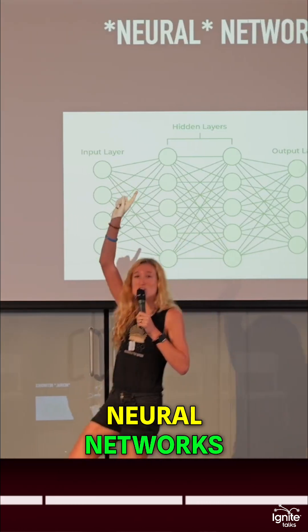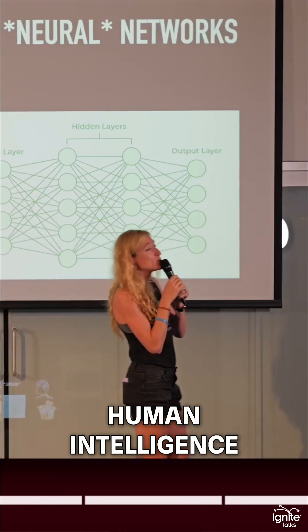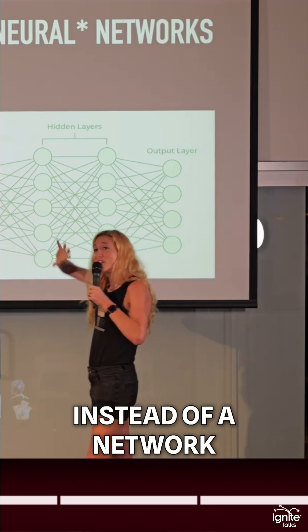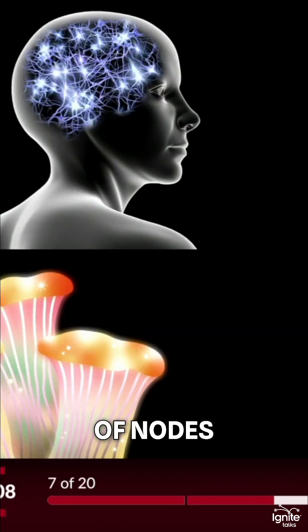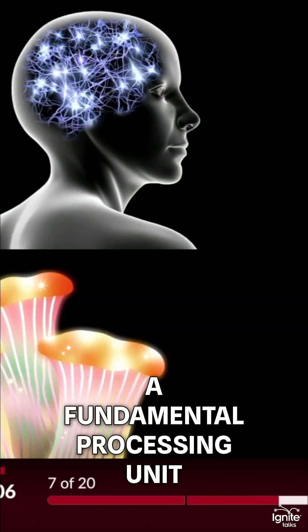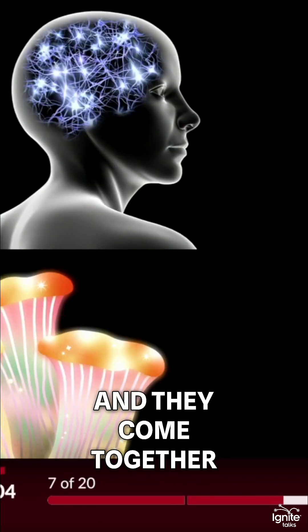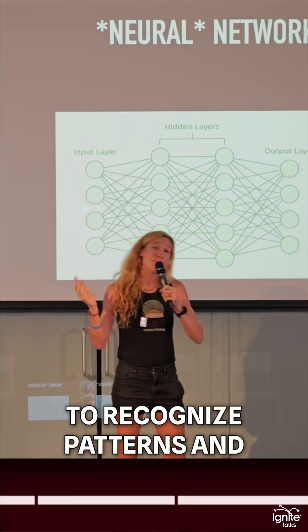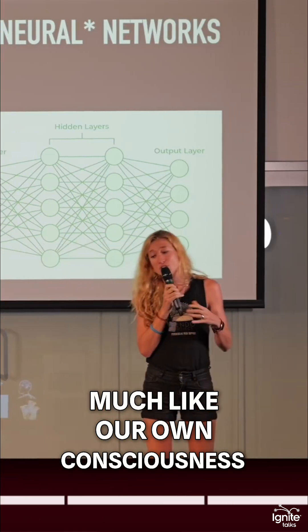I'm going to start with neural networks which were inspired by human intelligence. So instead of a network of neurons, they are a network of nodes. Each node is like a fundamental processing unit and they come together to recognize patterns and make decisions much like our own consciousness.